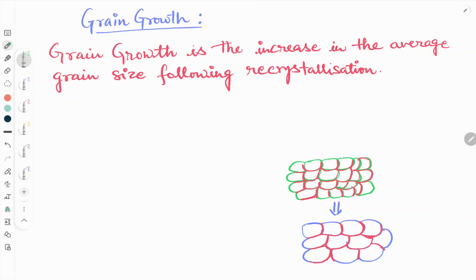Hello friends, welcome to our YouTube channel Metallurgical Engineering. With the continuation of physical metallurgy concepts, today we will see about grain growth. After recovery and recrystallization, this is the third step. Grain growth is the increase in the average grain size following recrystallization.